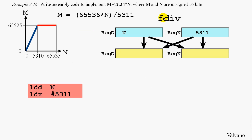So, to use the FDIV instruction, we'll bring the value of N into register D using the load D N. And we'll bring the constant 5311 into register X using the load X pound 5311. After executing the FDIV instruction, register X has the quotient of 65536 times N divided by 5311.